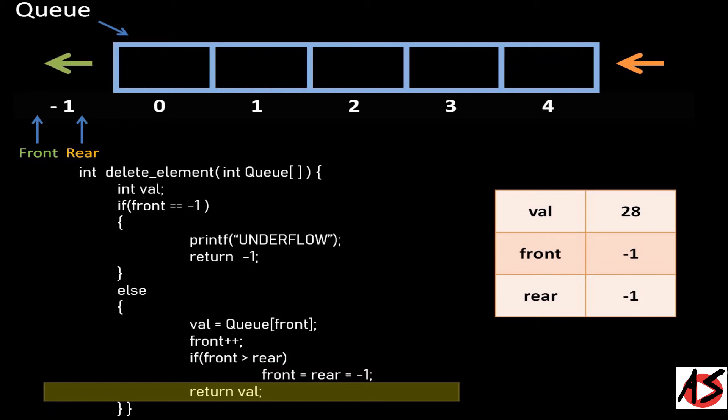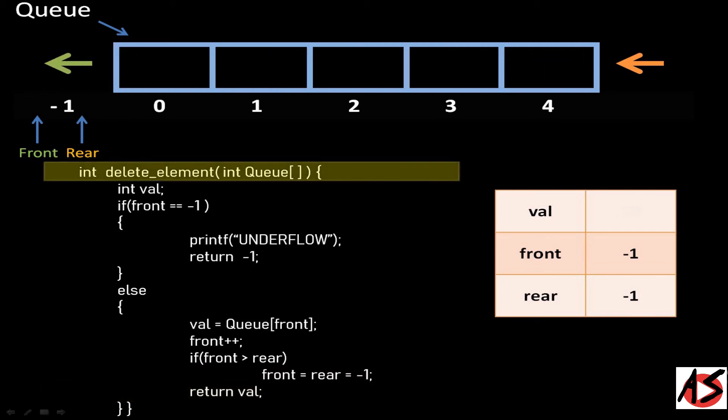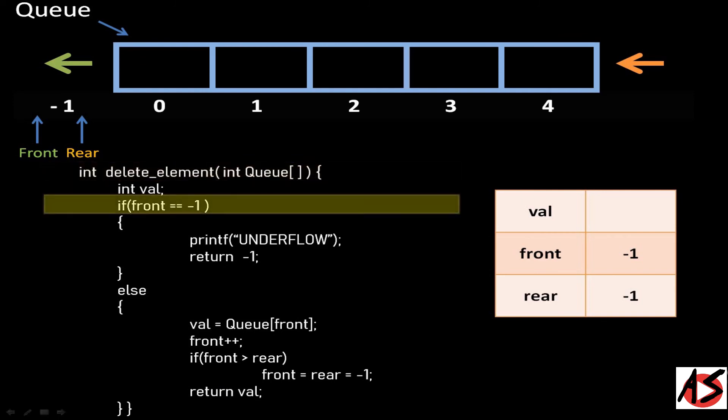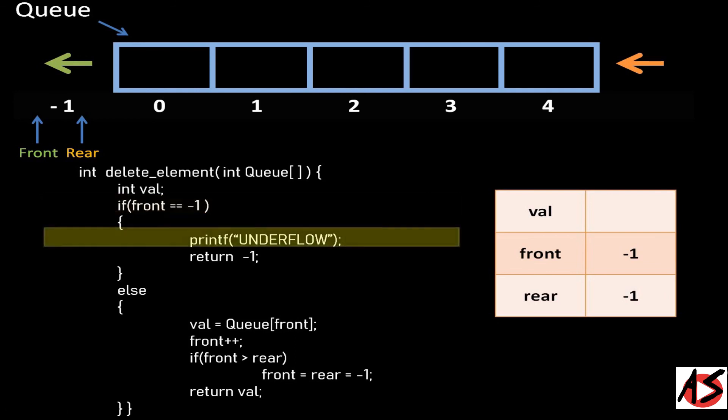Now if we want to delete one more element, the condition front equals minus 1 becomes true and we get an underflow message. It shows that the Queue is empty and we cannot delete any more elements.